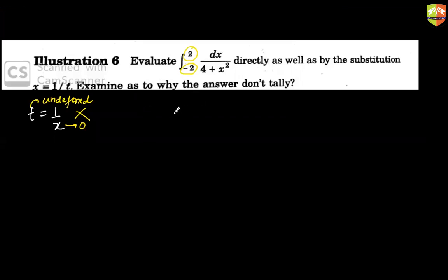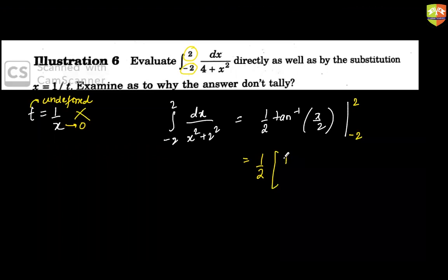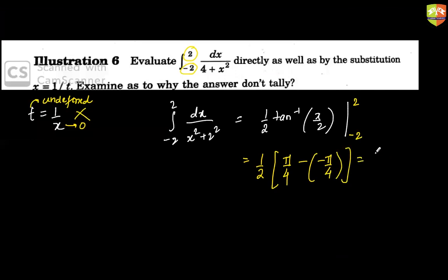If you solve it directly: integral from minus two to two of dx/(x² + 4), the answer is (1/2) tan⁻¹(x/2). Putting the limits, when x = 2 it becomes (1/2) tan⁻¹(1) = π/4, minus (−π/4), giving π/4 as the final answer.